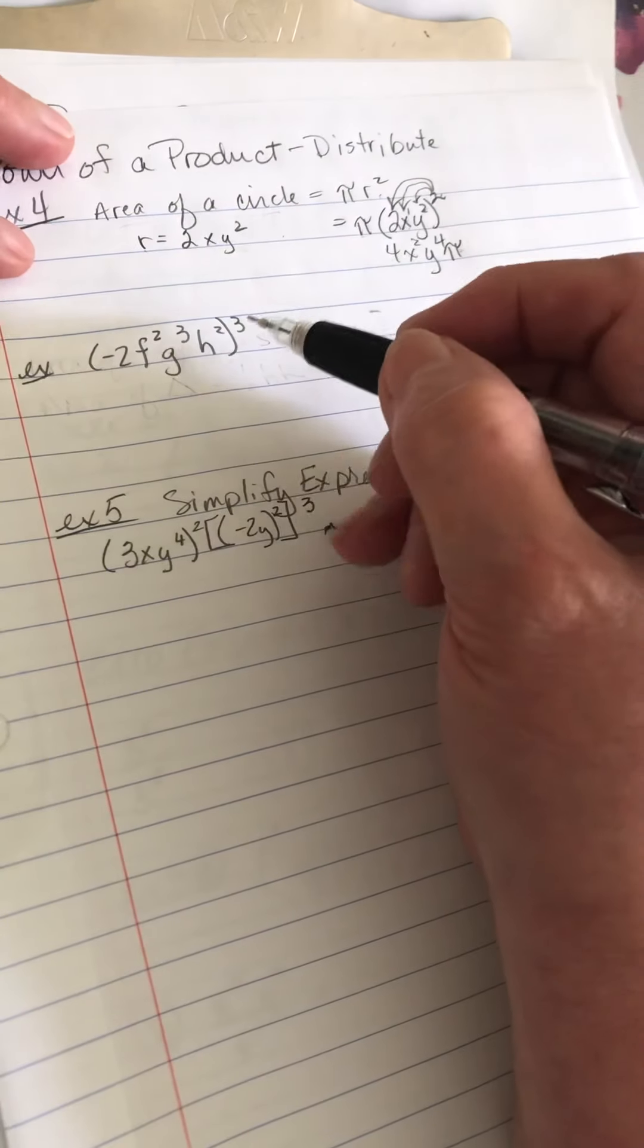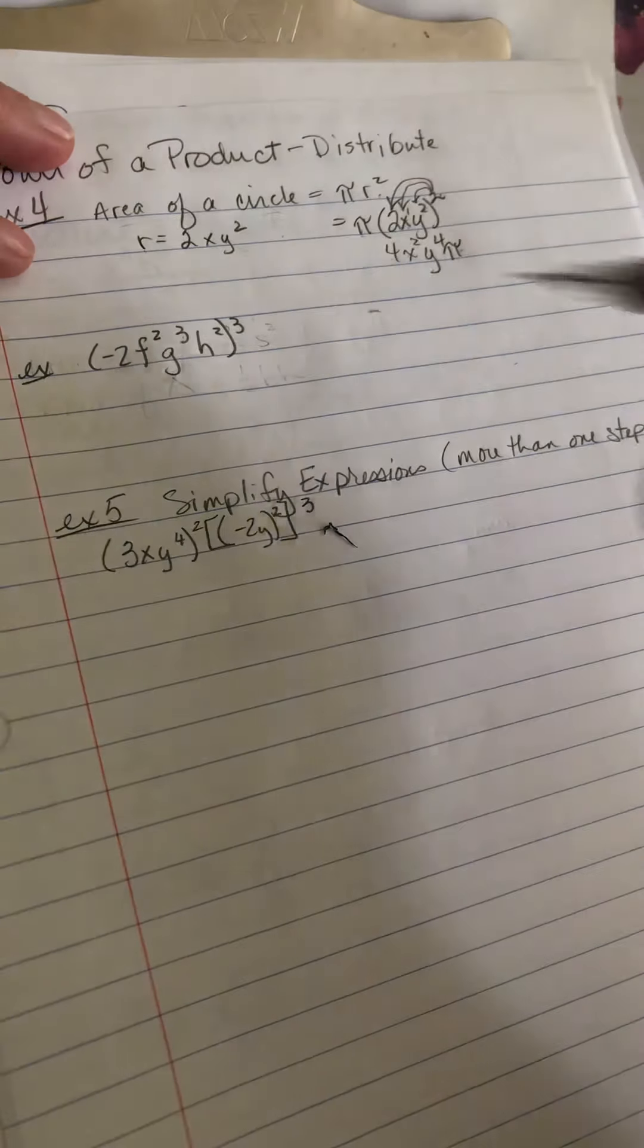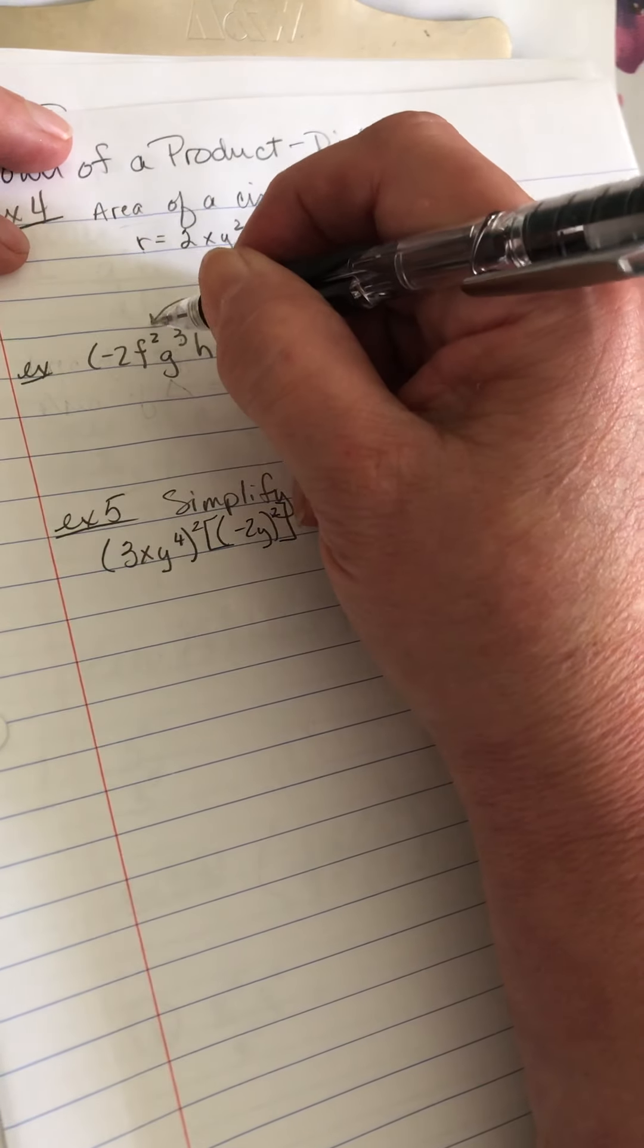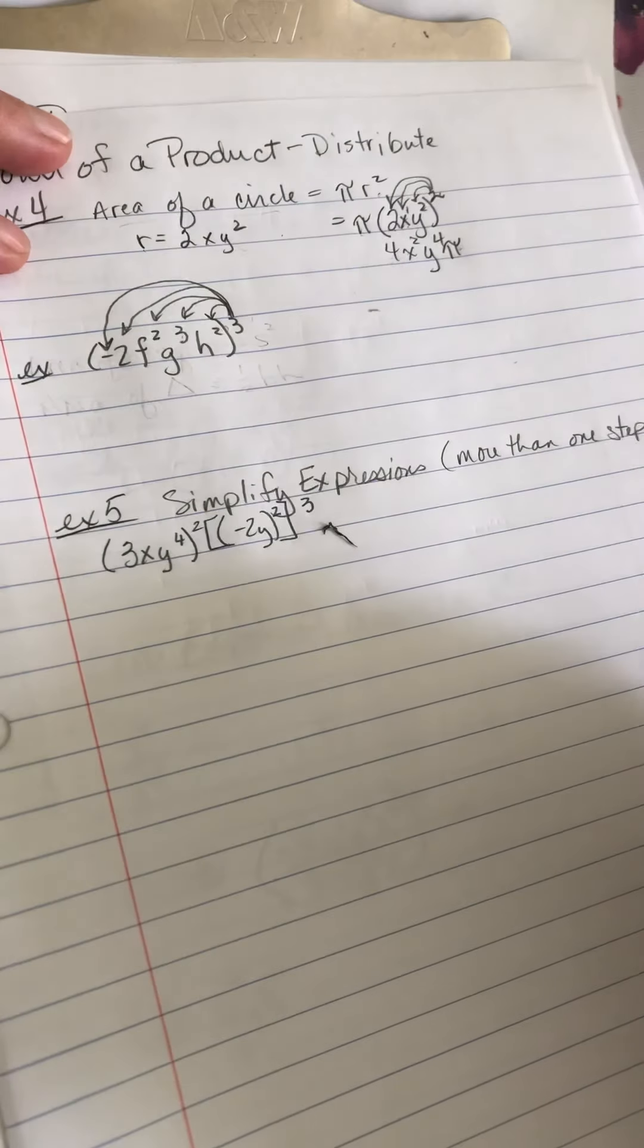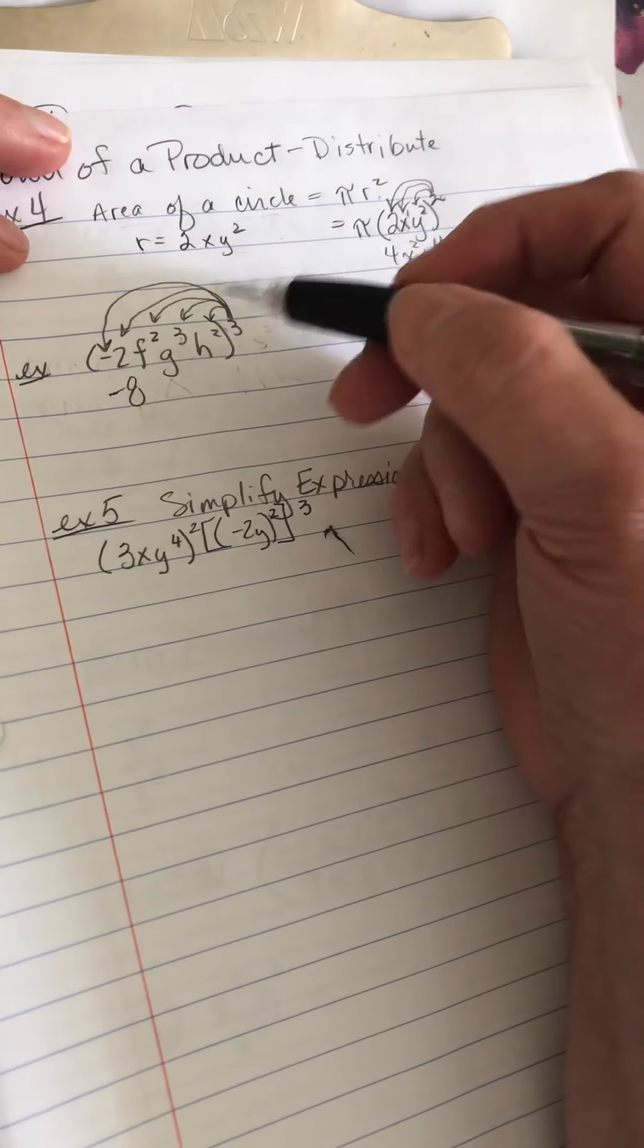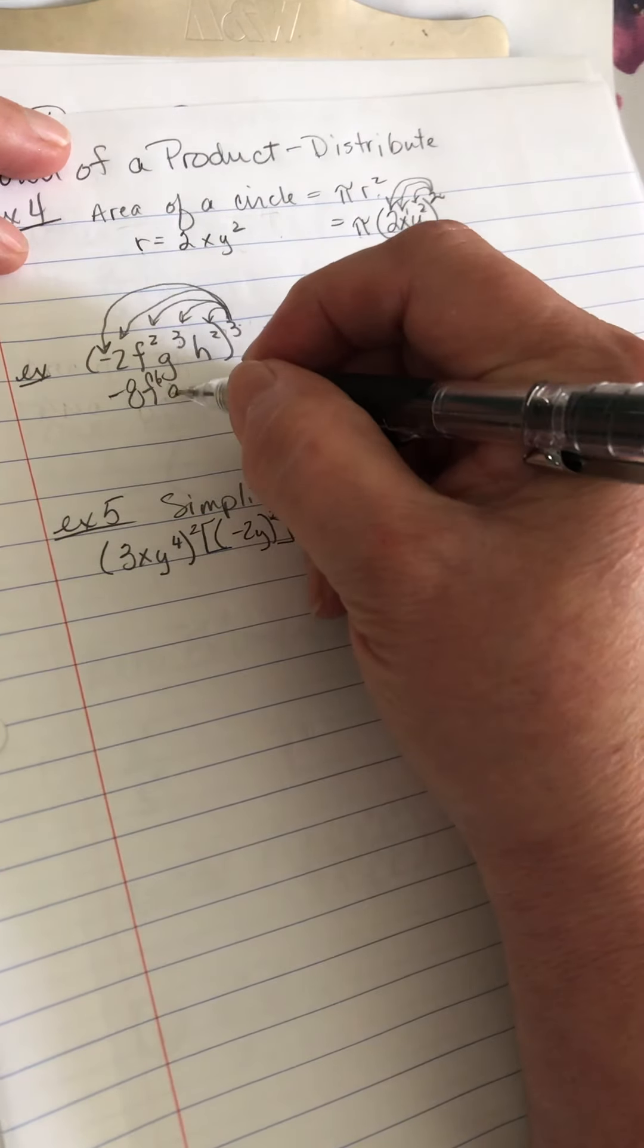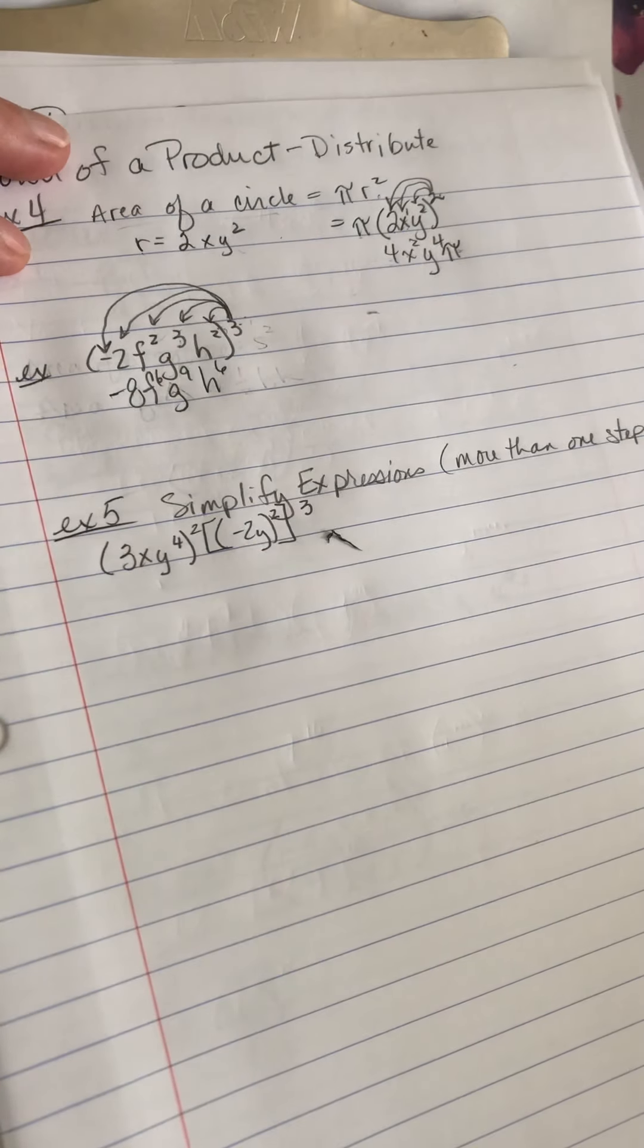I put an extra example. So negative 2, f to the 2nd power, g to the 3rd, h to the 2nd, all raised to the 3rd power. That means I'm going to distribute this to everything inside the parentheses. Now that negative to the 3rd power means it's still going to be negative. If I had an even power it would be positive. 2 to the 3rd power is 8. 3 times 2 is 6, so f to the 6th power. 3 times 3 is 9, g to the 9th power. 2 times 3, h to the 6th power.